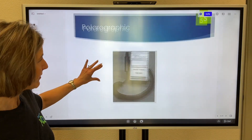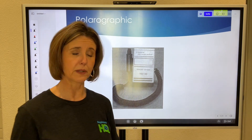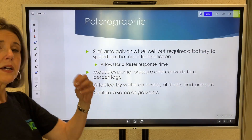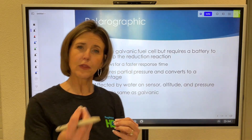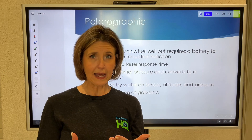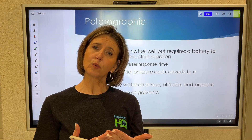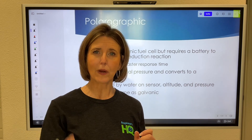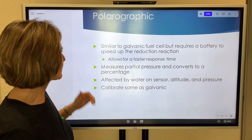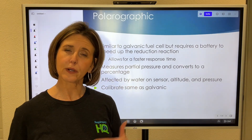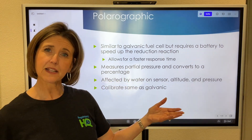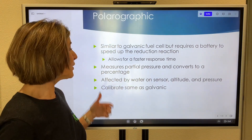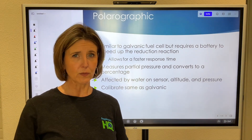Polarographic oxygen analyzers — which are the ones you'll actually see in the hospital — have lots of similarities to the galvanic. But the key difference is that polarographic analyzers have a battery in them. That battery speeds up the chemical reaction, and when you speed up the chemical reaction you get a faster response time. So polarographic oxygen analyzers give you really rapid readings. They measure partial pressure and convert it to a percentage, just like the galvanic, and they're affected by the same factors: water on the sensor, altitude, and pressure. Calibration is also the same: 21% and 100%.